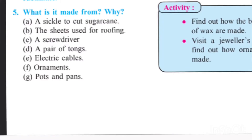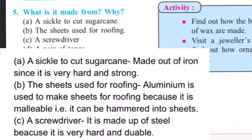Question number five: What is it made from and why? First: A sickle to cut sugar cane. Answer: A sickle to cut sugar cane is made out of iron since it is very hard and strong. Second: The sheets used for roofing. Aluminium is used to make sheets for roofing because it is malleable — that is, it can be hammered into sheets.